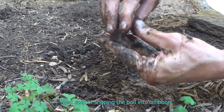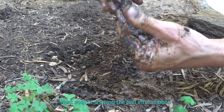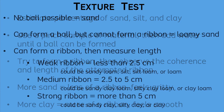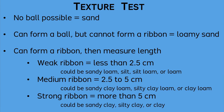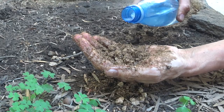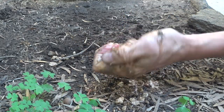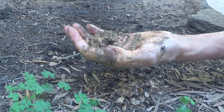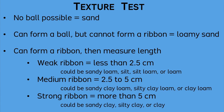With more sand content or larger sized particles, the ribbon is weaker and it feels grittier. With more clay content or smaller sized particles, the ribbon is stronger and it feels smoother. If the material does not form into a ball, then the particles are the size of sand or perhaps larger. Water does not remain trapped in the spaces between large sized clasts, and accordingly most sands and gravels are well drained. With particles that are smaller than sand, water can be trapped and create enough cohesion to form a ball shape.